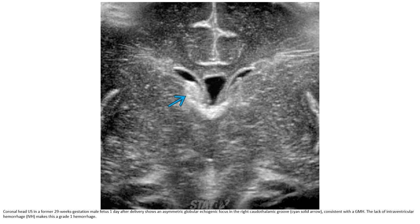This is the ultrasound of a 28-week gestation male fetus one day after delivery. There is an asymmetric globular echogenic focus in the right caudothalamic groove, consistent with a germinal matrix hemorrhage. The lack of intraventricular hemorrhage makes this a grade one hemorrhage.